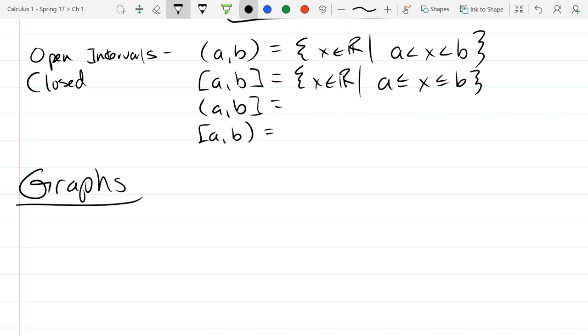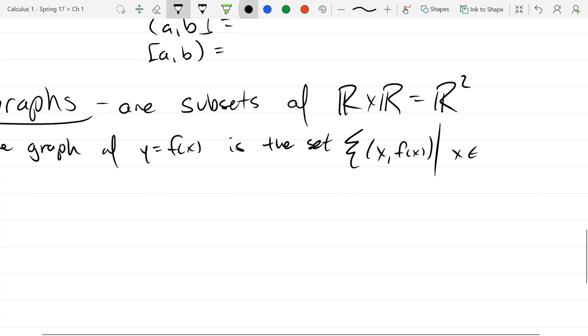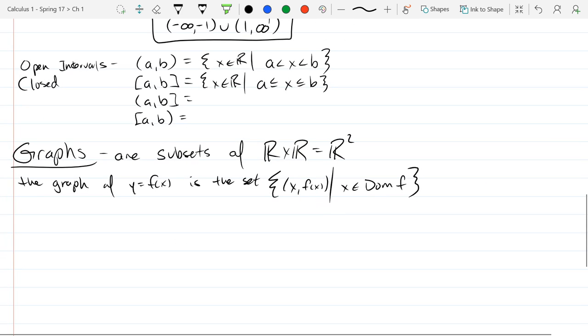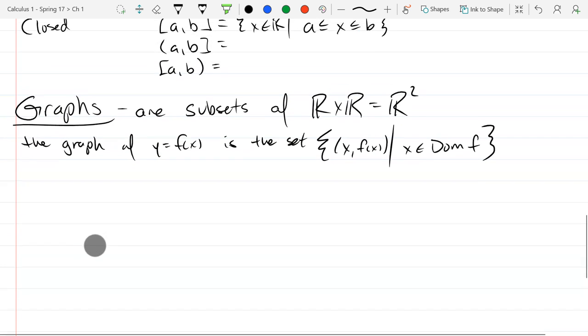So, I did draw a graph already. I didn't define a graph. Graphs are subsets of R times R, which is R squared. If I write in set builder notation, it's all points x comma f of x, such that x is in the domain of f. Another way to think about it, it's all points x comma f of x, such that it makes sense to plug in x. That's all we mean by x is in the domain. So if it doesn't make sense to plug in that number into f, then it's not going to be on that graph.